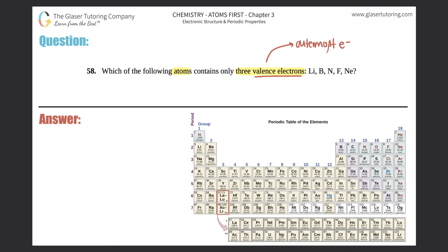Those electrons in the outermost shell are called valence electrons. For example, if you had an atom with a nucleus and this element had two shells — n equals one and n equals two — the valence electrons would be the ones found in the last shell possible for that atom. In this case, there are four valence electrons: one, two, three, and four.